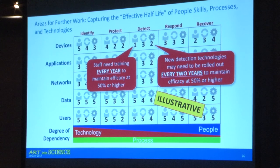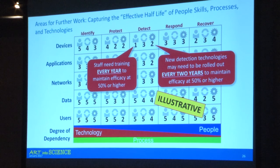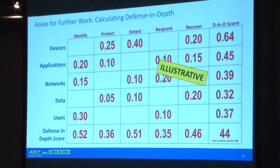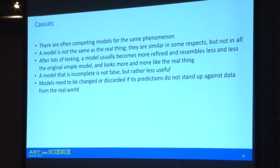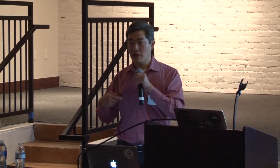Areas for further work include capturing half-life — how effective a technology, process, or people are over time for each area. For example, the drivers for human behavior don't change very often, so you don't need to change out technologies or skill sets much there, but devices and applications change much more often. Being able to calculate defense in depth — calculating the values for each of these different areas — is another area for additional work. Finally, caveats: there are tons of other models trying to describe these phenomena. What we're trying to do is collapse them into something coherent. Ultimately, how do you falsify this model? Give me a vendor that doesn't seem to fit, and it either breaks the model or reveals another area to extend.